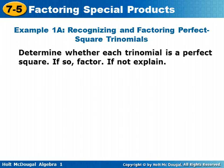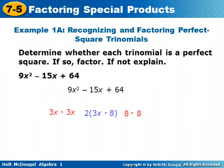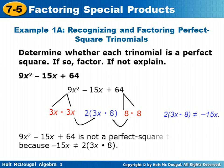Determine whether each trinomial is a perfect square. If so, factor. If not, explain. For 9x squared minus 15x plus 64: 9x squared is a perfect square — 3x times 3x, or 3x squared. 64 is a perfect square — 8 times 8, or 8 squared. The middle term would need to equal 3x times 8 times 2. However, 2 times 3x times 8 does not equal negative 15x. So 9x squared minus 15x plus 64 is not a perfect square trinomial because negative 15x does not equal 2 times 3x times 8.